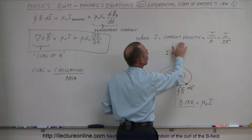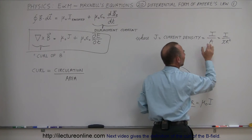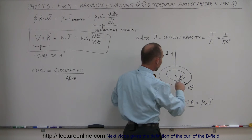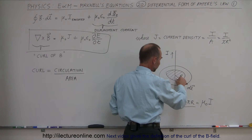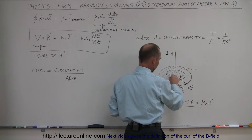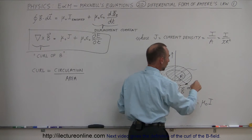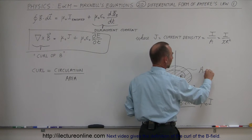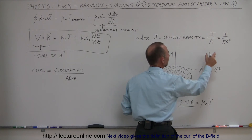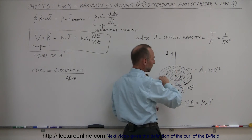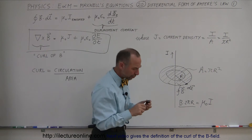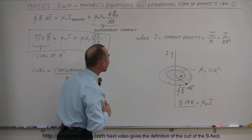Current density is the current in that region divided by the cross-sectional area. For a circular cross section extending to radius r, the area is simply πr². So if we take the current in the wire divided by πr², we have the current density in this region. Here's where the two equations differ a little bit.